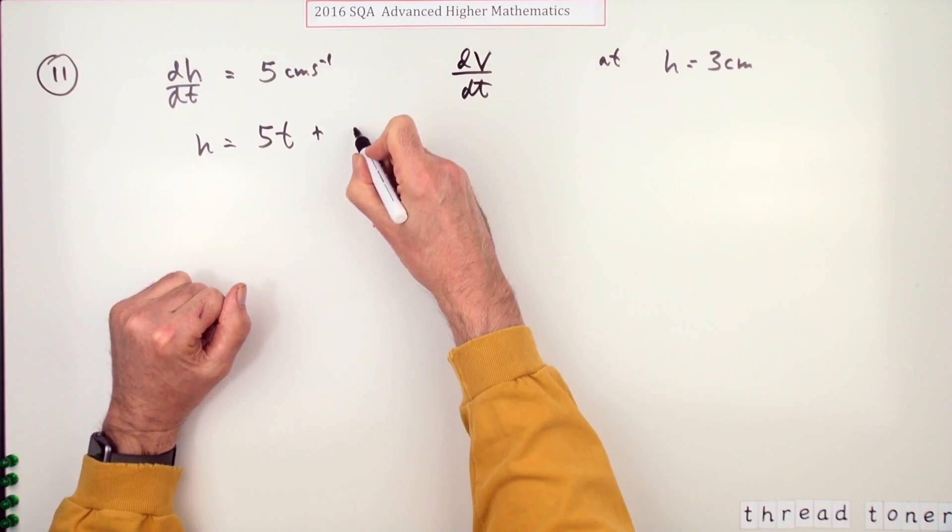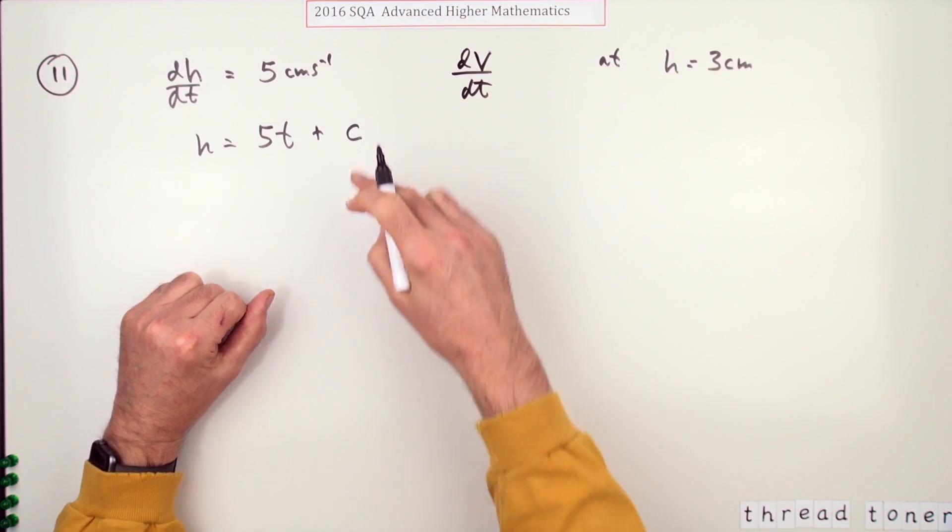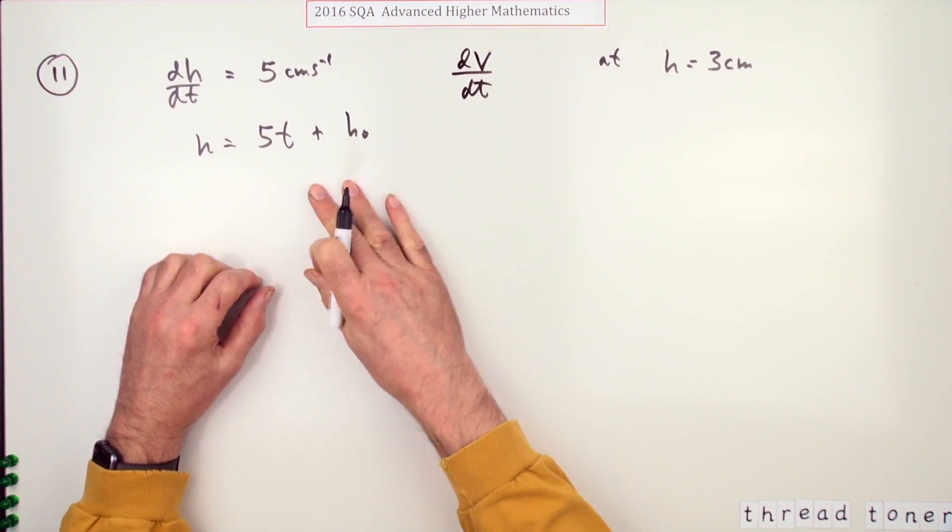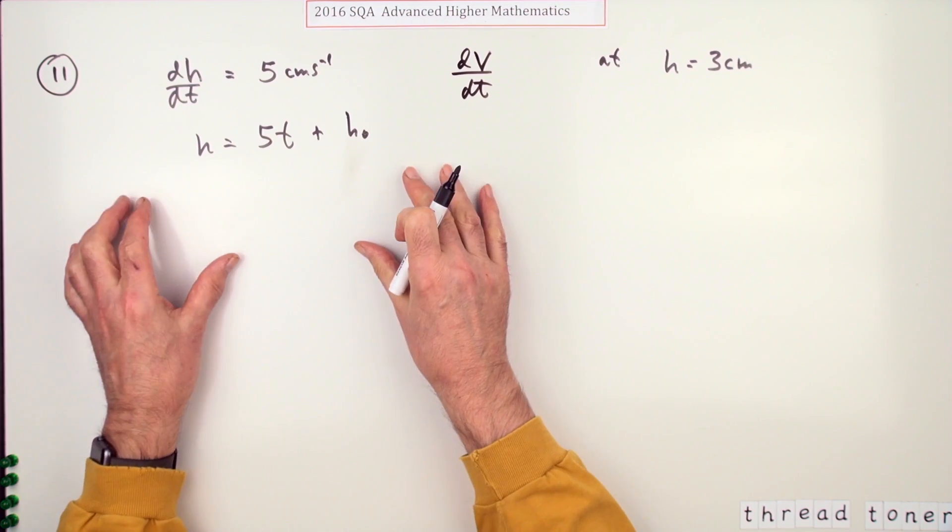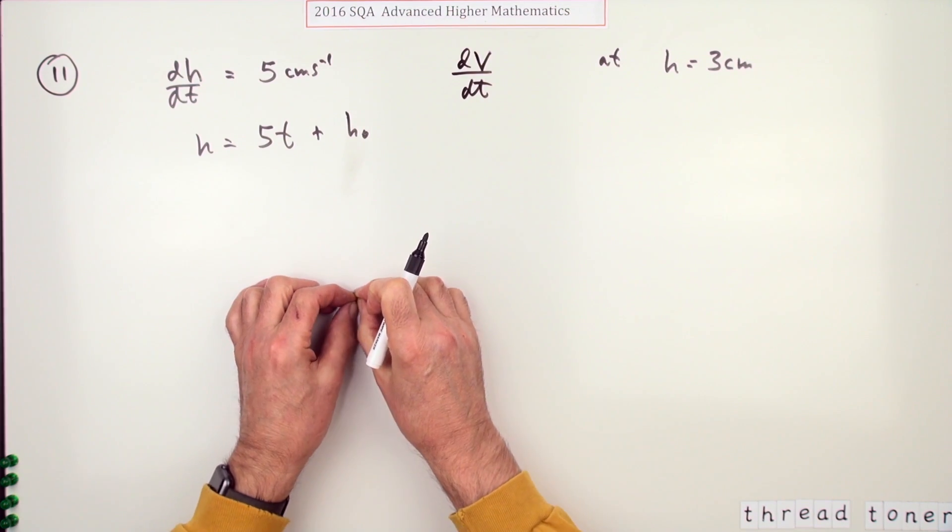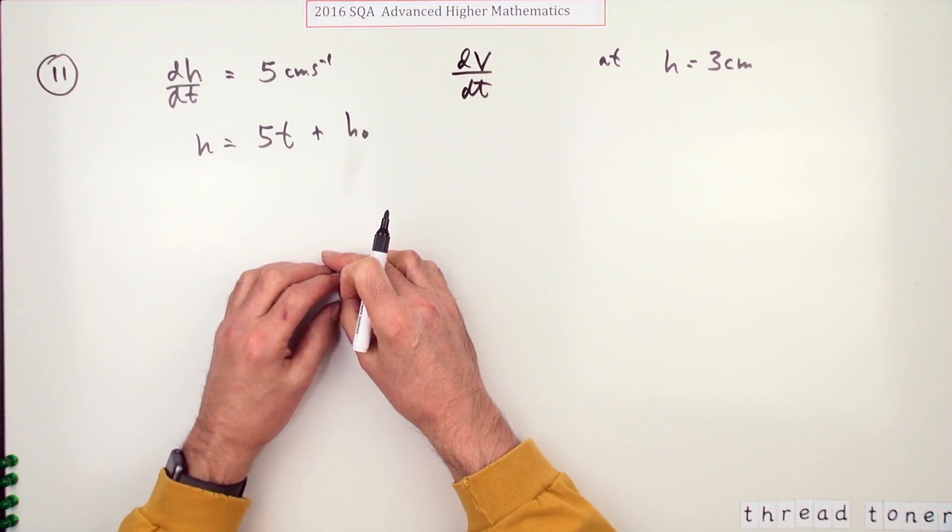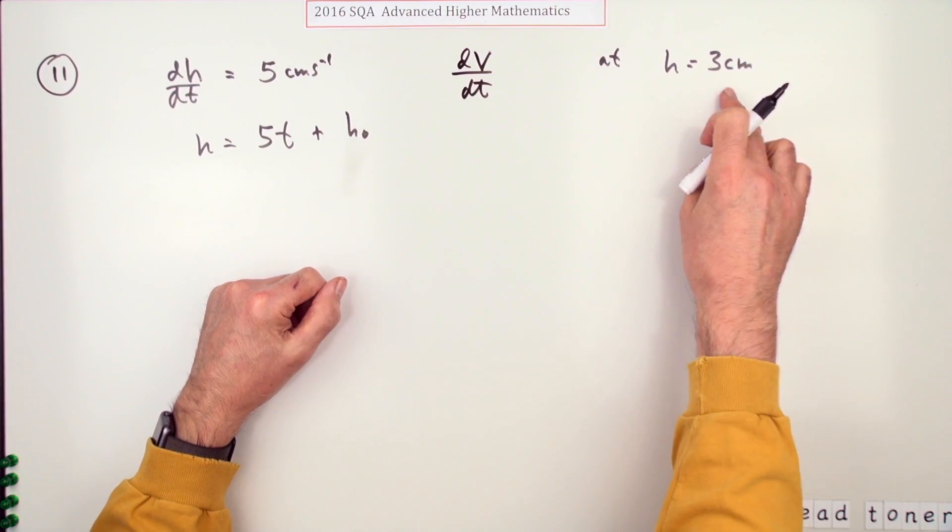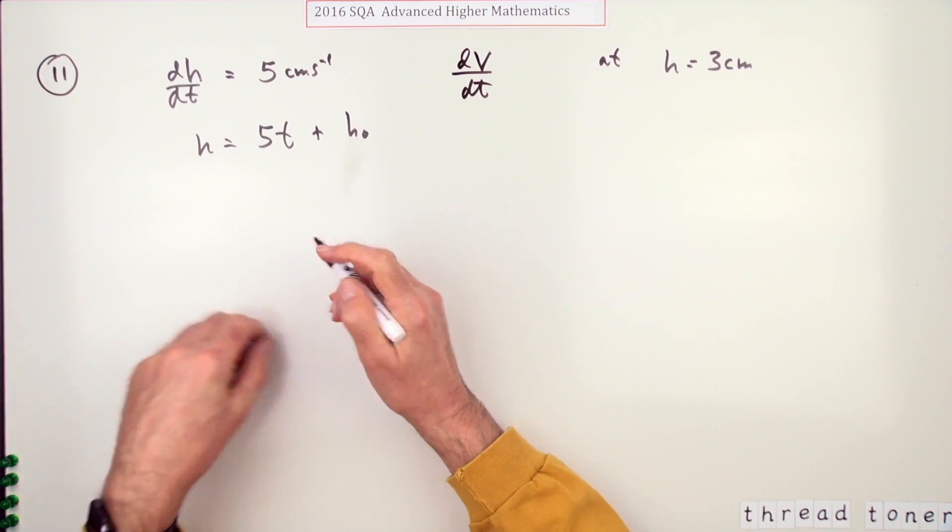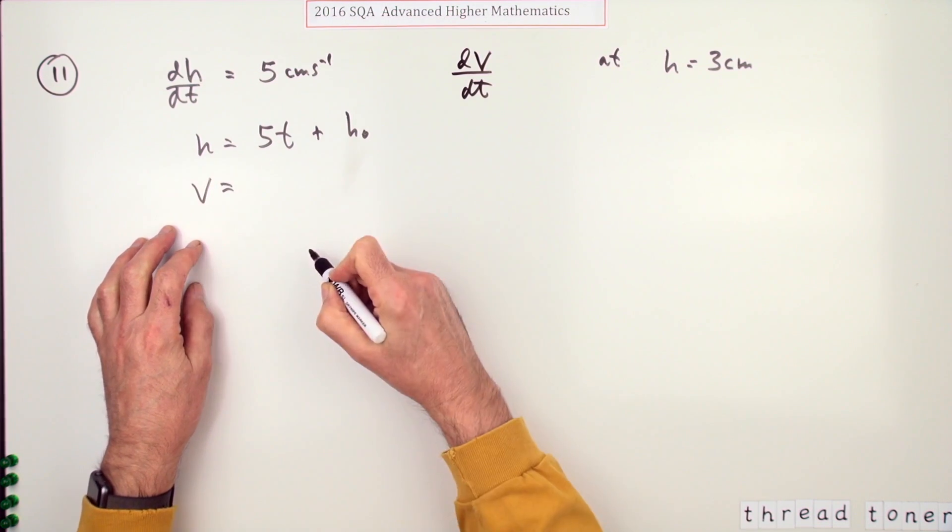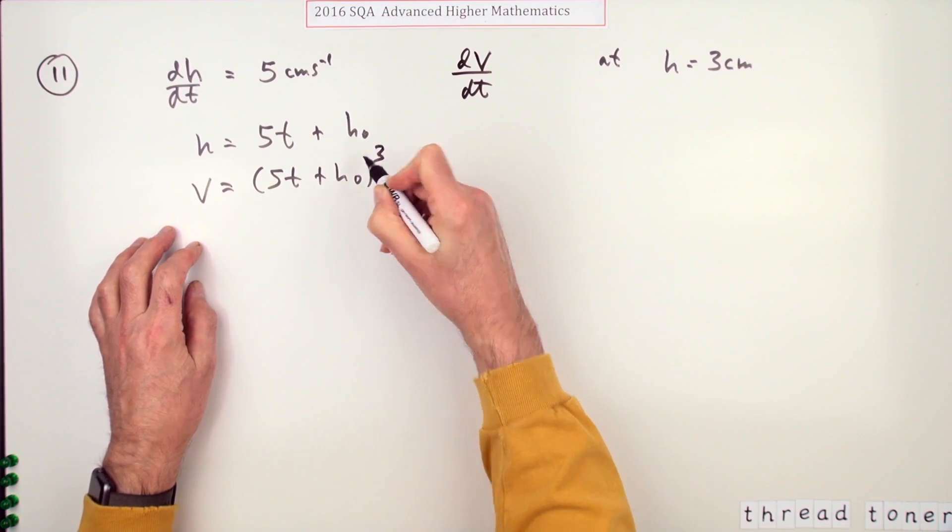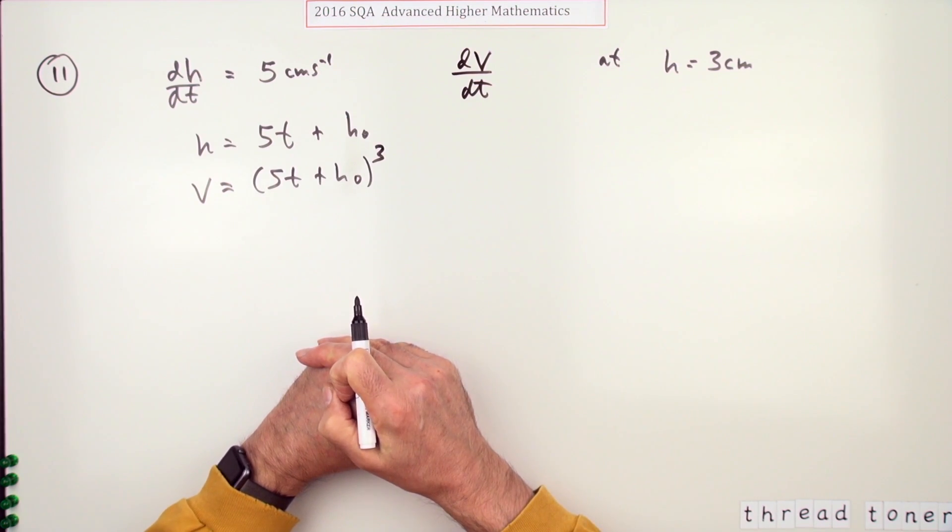But plus some constant, where that constant would be the height at the start, because there's no mention in this question of this cube multiplying up from zero. I just said it's increasing at five centimeters per second, certainly round about when the height was three. And then you could have a formula for the volume which would be (5t + h₀)³. Of course, there's no h₀ mentioned in the marking scheme.